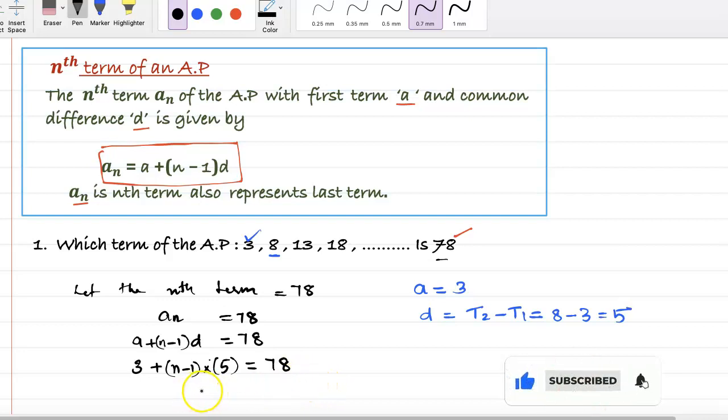So we can simplify this. We can write (n minus 1) into 5 is 78 minus 3, which is 75.